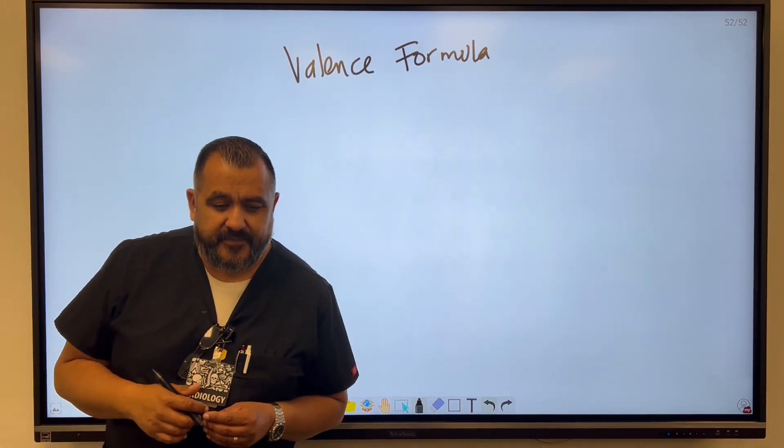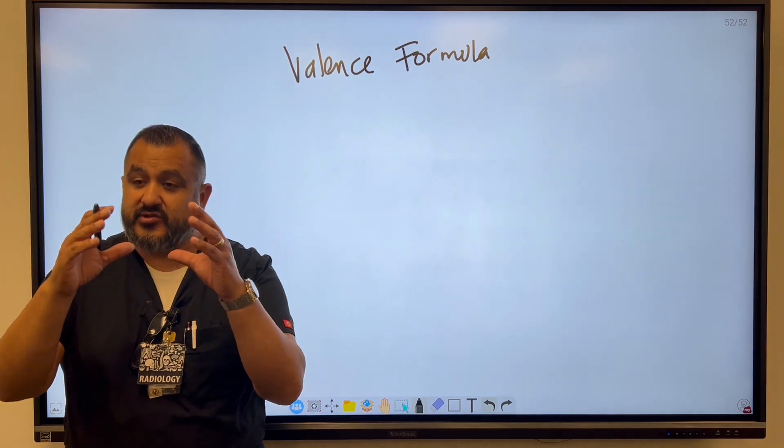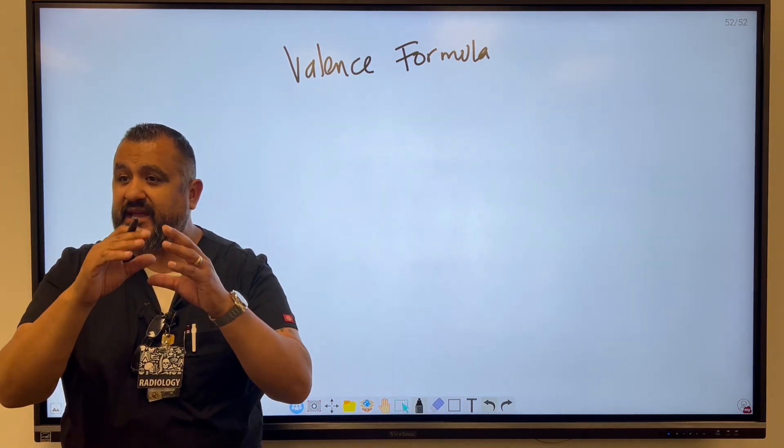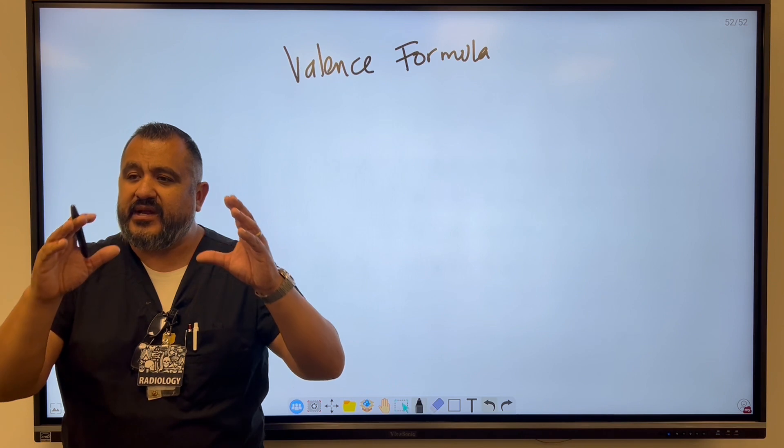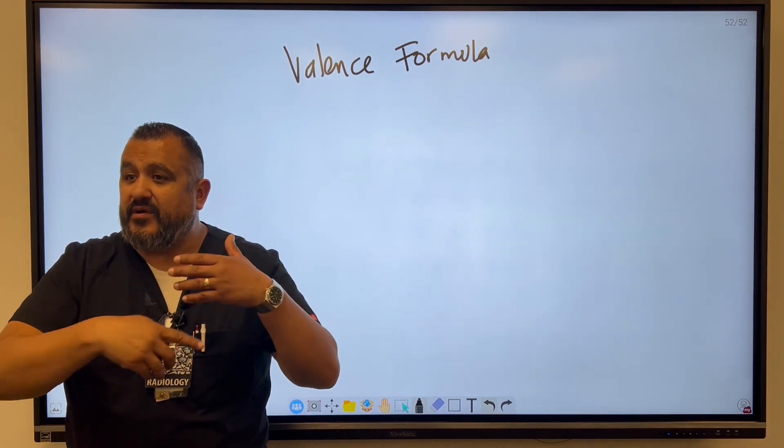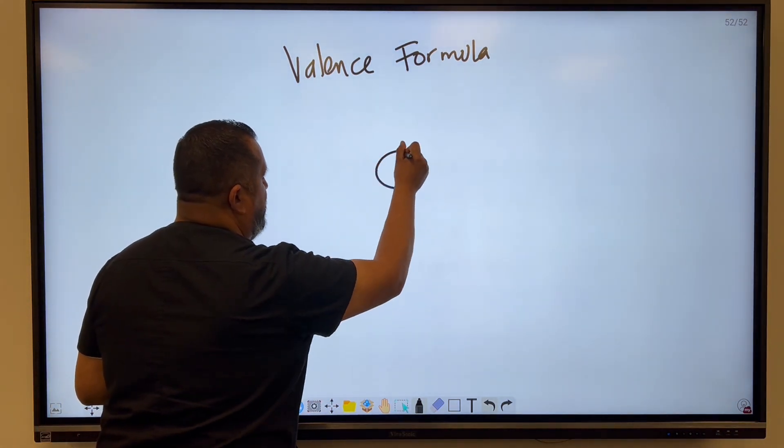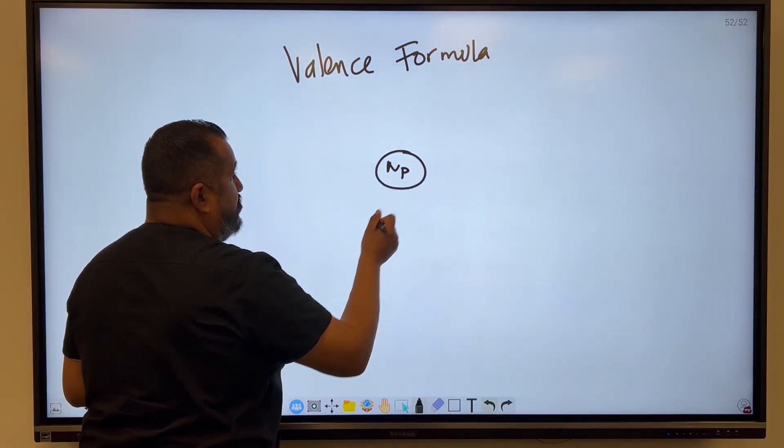So the valence formula. We know that there are different orbiting shells depending on the element, the atom. You can have different orbiting electrons going around. The energies are traveling around the nucleus of the atom. So I'll start off with this. We have the nucleus, it has neutrons and protons.